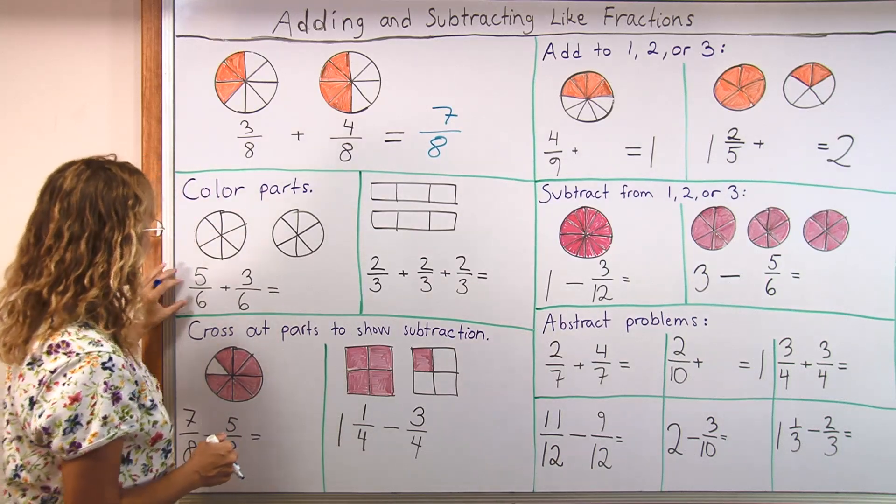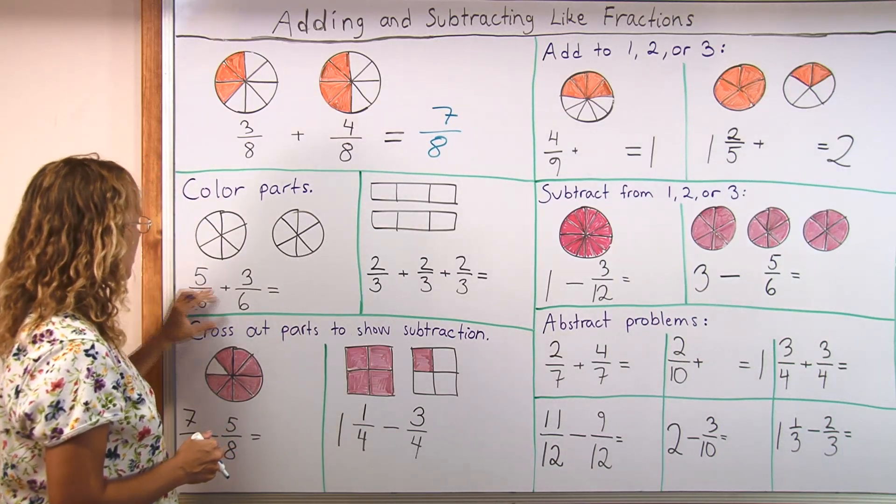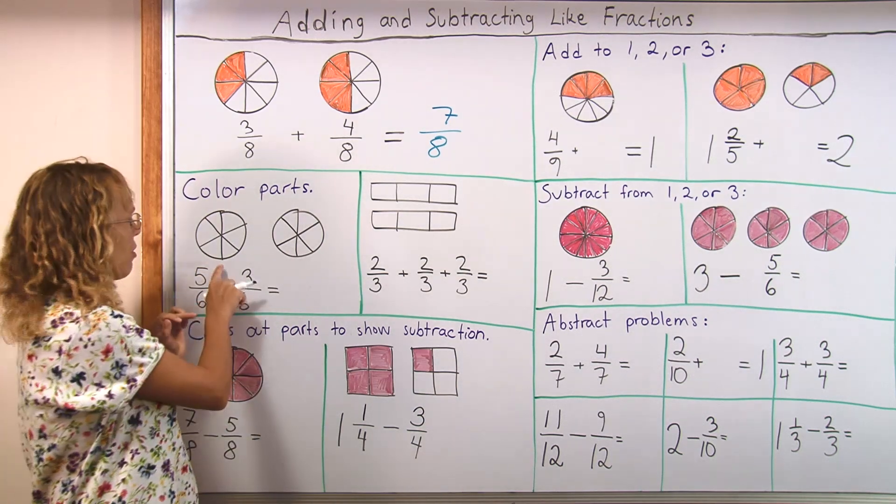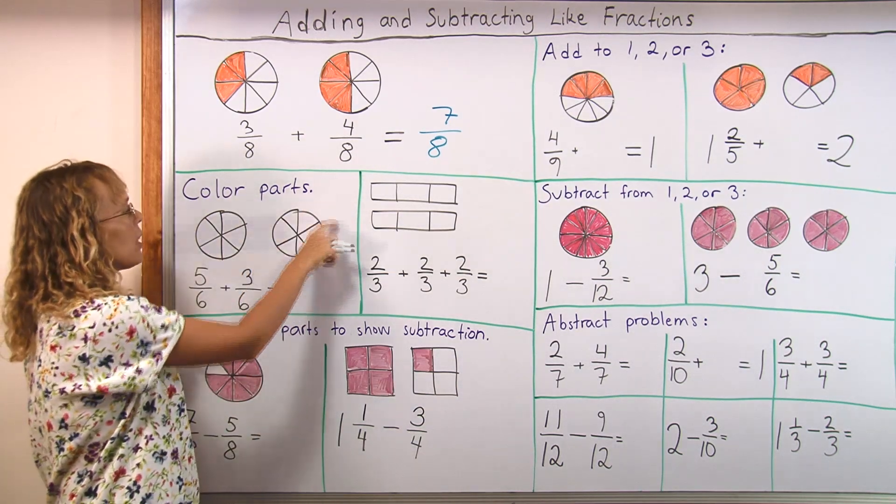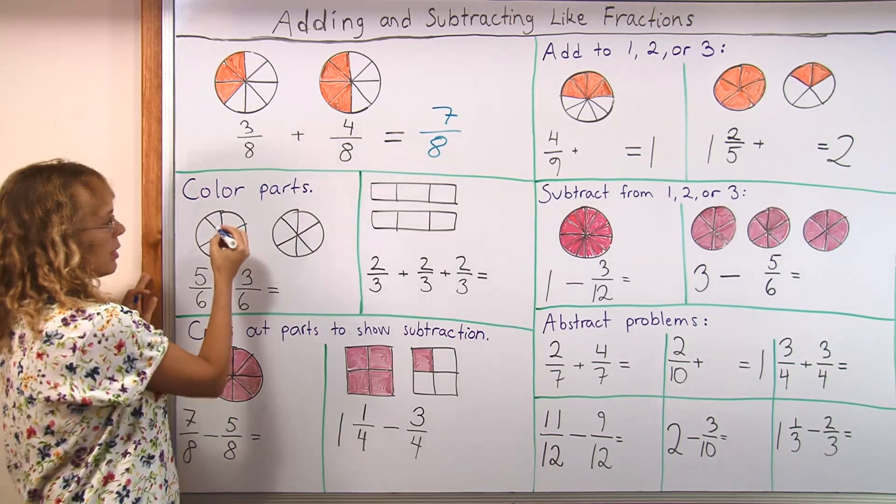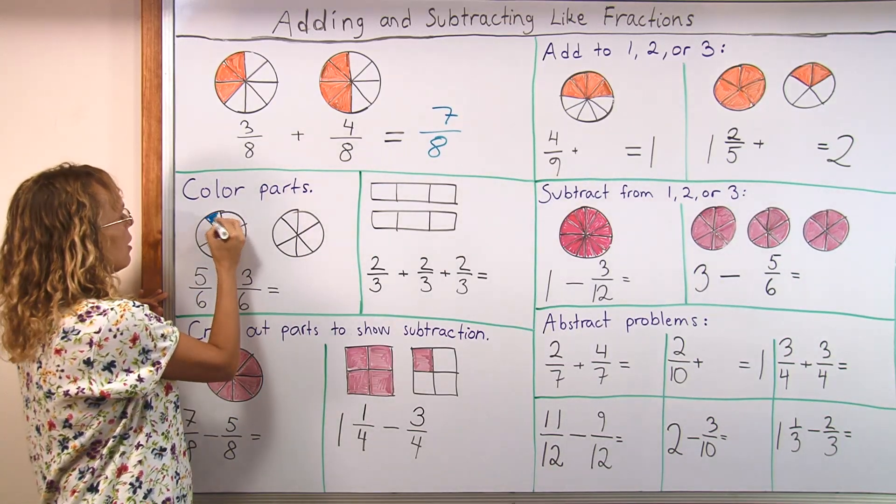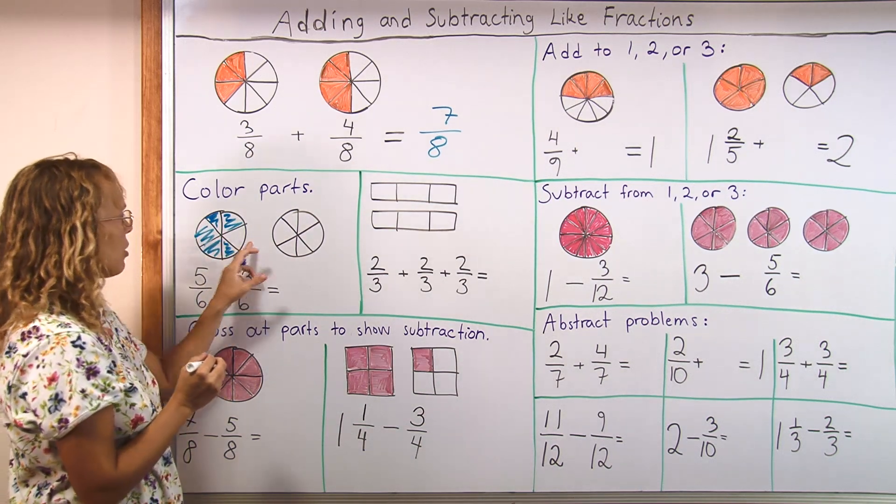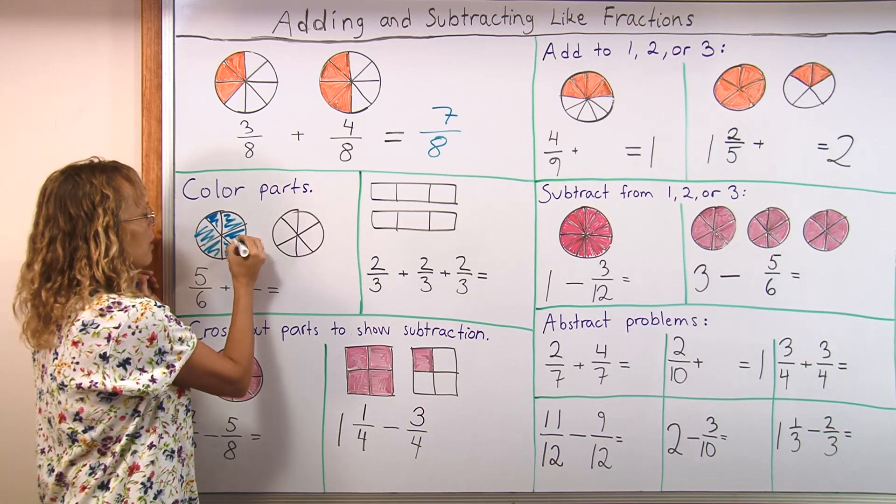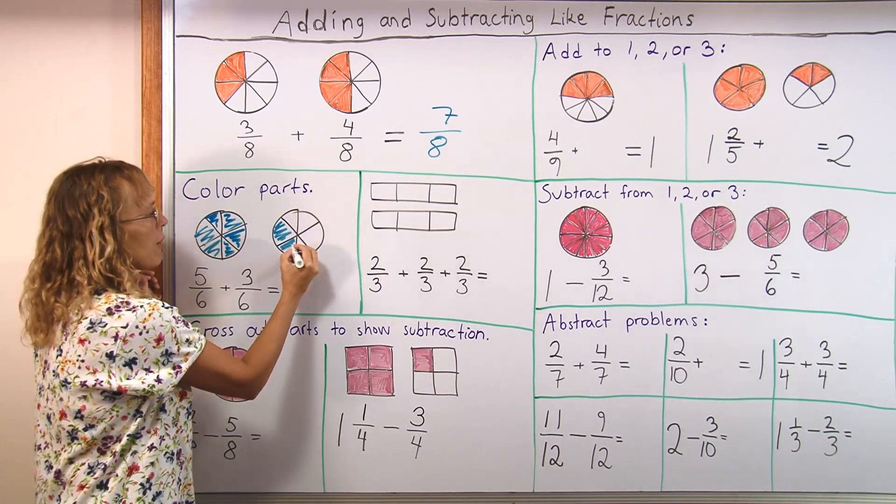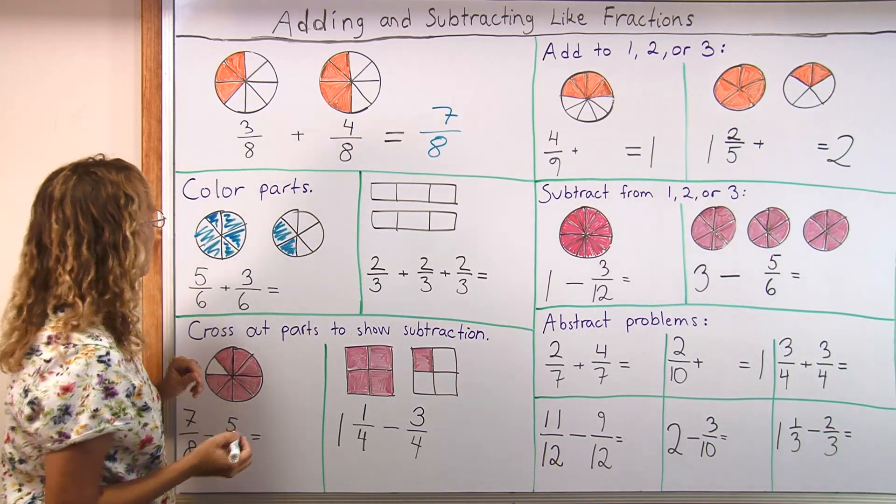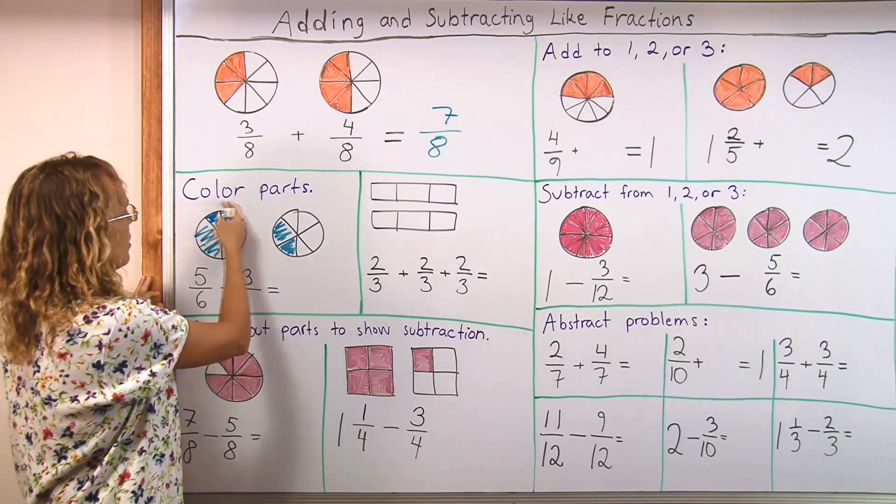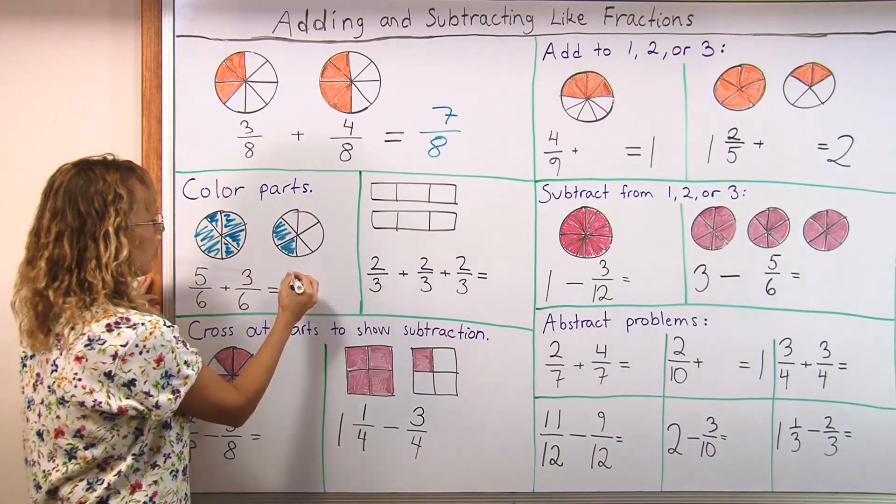Now let's say we have this kind of problem 5 sixths plus 3 sixths. And instead of coloring 5 sixths in this picture and 3 in this, let's instruct the students to color the 5 sixths here. And then the 3 sixths continue coloring from here. You know 1, 2 and 3 sixths are now colored. And now we can see the total. The answer is that's 1, 1 whole pie and 2 sixths.